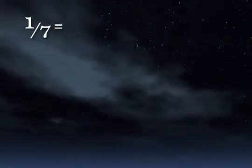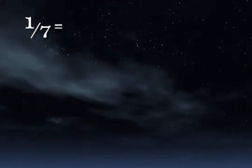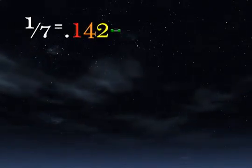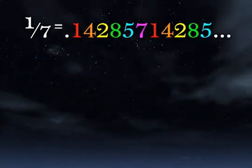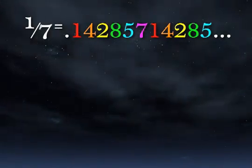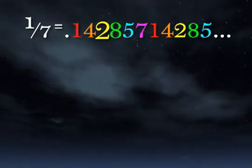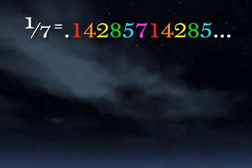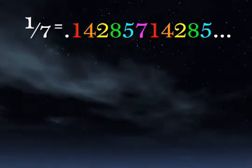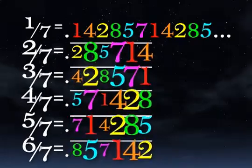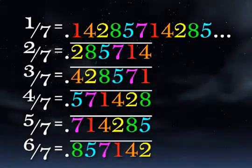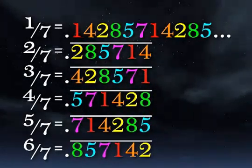The sevenths. All you have to do is memorize this string of numbers: 1, 4, 2, 8, 5, 7. It's not hard because 7 doubled is 14. 14 doubled is 28. And 28 doubled is 56, which is just slightly under 57. Here are all the sevenths. The number order is always the same. It just comes down to where to start the sequence.